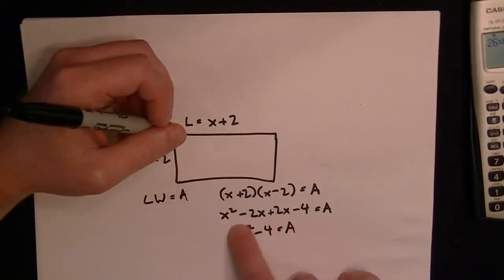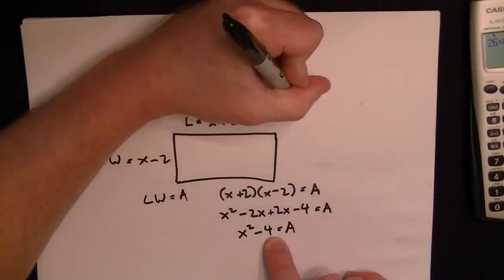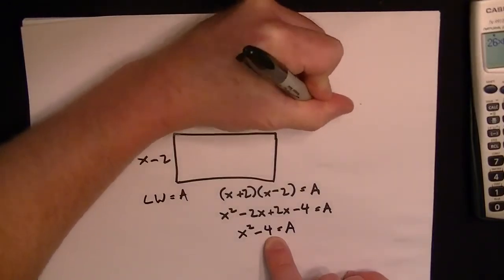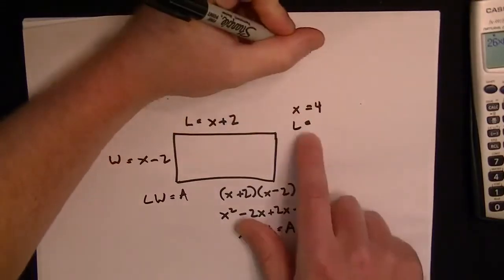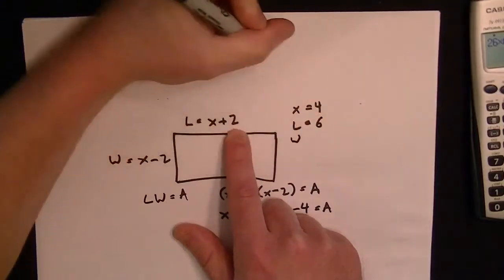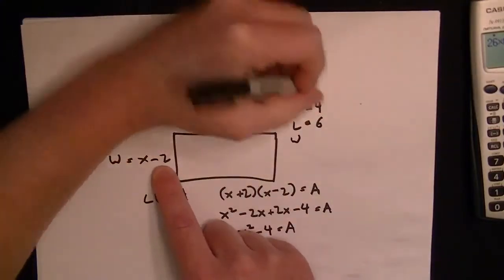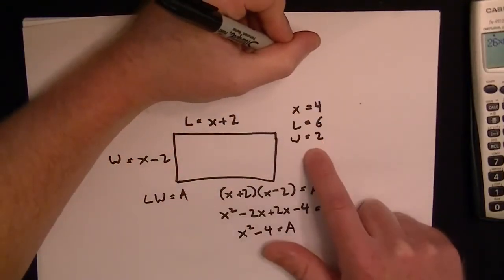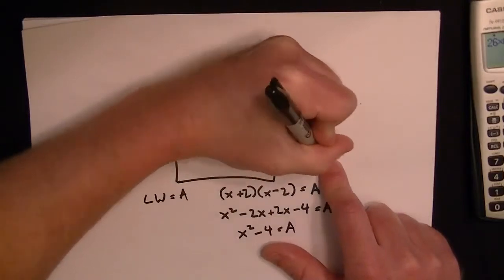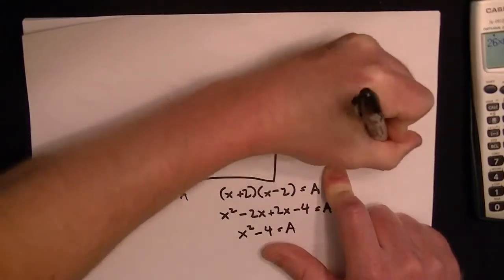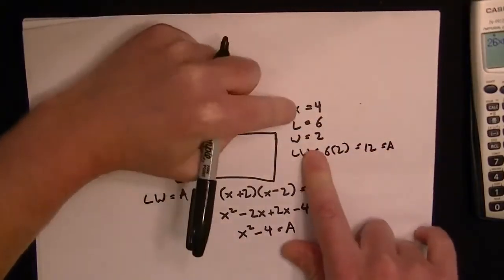Let's verify with an example. If x is equal to 4, that means the length is going to be 4 plus 2, which is 6, and the width is going to be 4 minus 2, which is 2. So the length times the width is 6 times 2, which equals 12. That's the area.